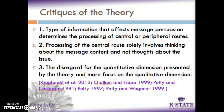A third instance of misinterpretation is the disregard of the quantitative dimension presented by the theory, with too much focus on the qualitative dimension. The peripheral route involves low elaboration persuasion that is quantitatively different from the central route, which involves high elaboration. The theory also explains that low elaboration persuasion processes are qualitatively different as well. One of the theory's key points is that elaboration can range from high to low, and data from experiments suggested that persuasion findings can be explained by a quantitative dimension without ever needing a qualitative one.